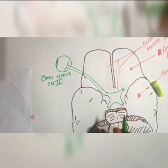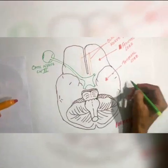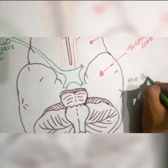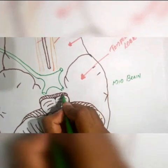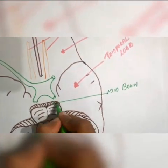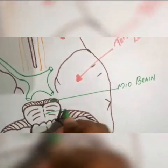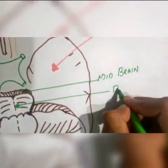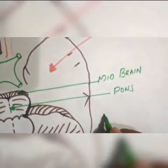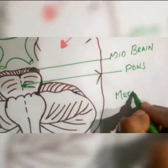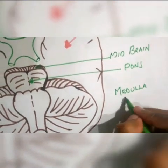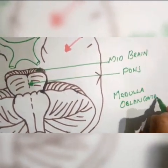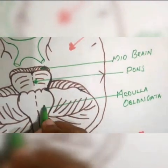Once again, we can see the brain stem in the inferior view. This is your midbrain. This is your pons. And finally, this is your medulla oblongata.